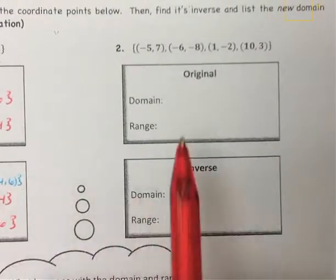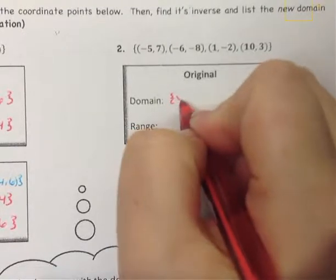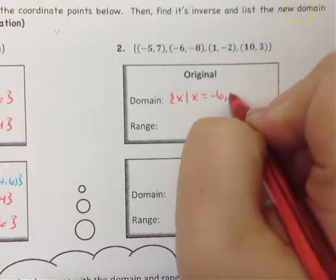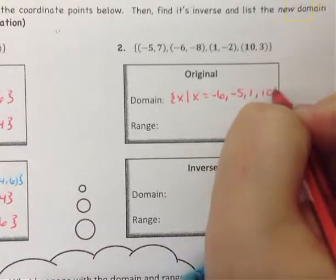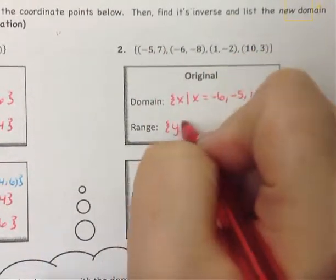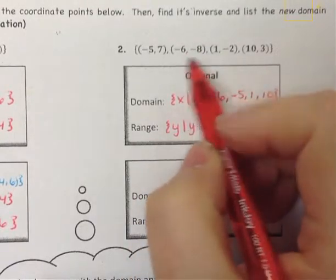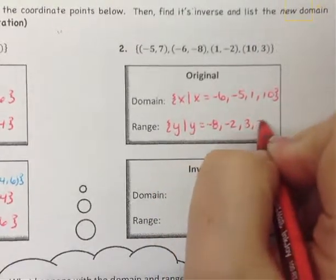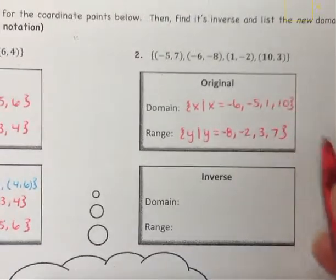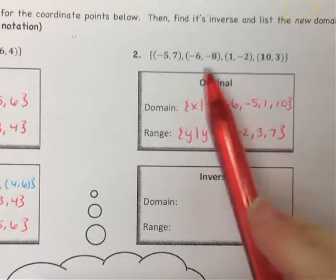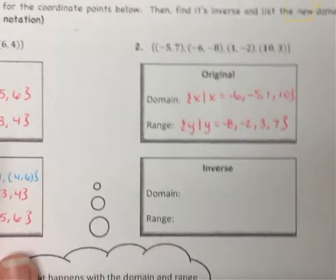Continuing on with this second example, for the original, the domain squiggle bracket x such that x is equal to — the smallest number is negative 6, then negative 5, then 1, then 10. Those are all the x values and we did not repeat any of them. For the range, y such that y is equal to — the smallest y value is negative 8, then negative 2, then 3, then 7. We have 4 coordinates and 4 x values in our domain, so this is a function — no repeating x values.